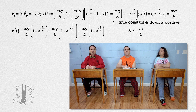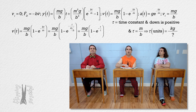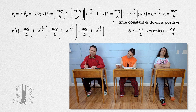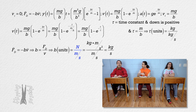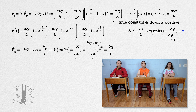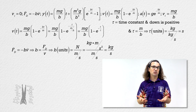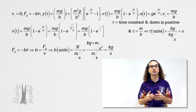Does anybody remember what the units for the proportionality constant are? Kilograms per second. Newtons divided by meters per second equals kilograms per second. That means the units for a time constant are kilograms over kilograms per second, or just seconds. The units for the time constant are seconds. That makes sense. But I still do not know what the time constant is. It is called the time constant. It has units of seconds.